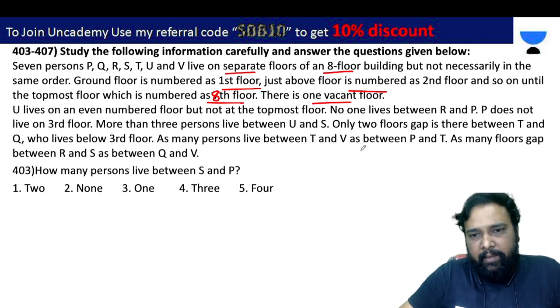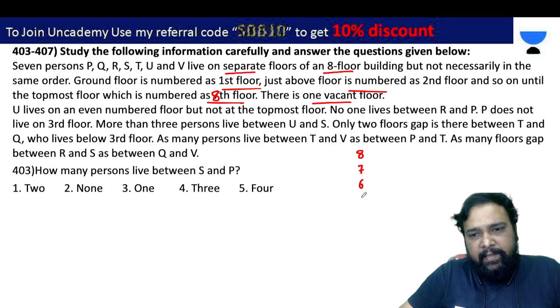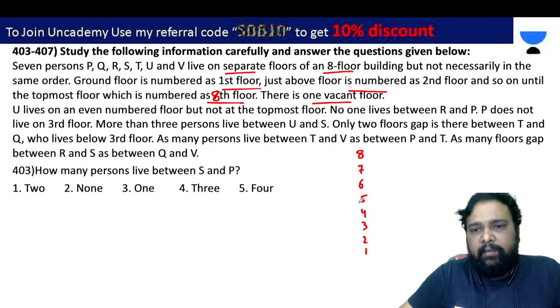Now we will number the floors from 8 at the top down to 7, 6, 5, 4, 3, 2, 1. We will lay out the floor arrangement from top to bottom.